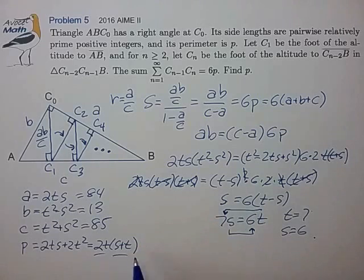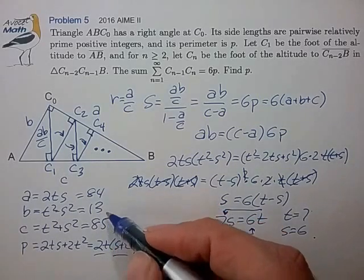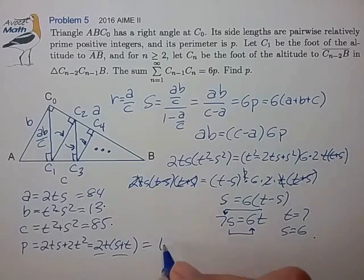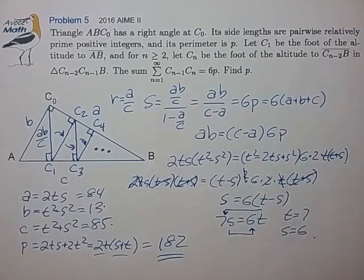And we can either evaluate this expression or just add these up. Let me just add these up. 84 plus 13 plus 85, that's equal to 182. And that's our final answer.